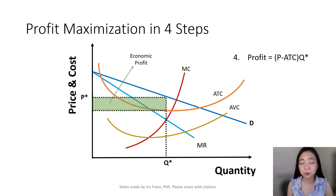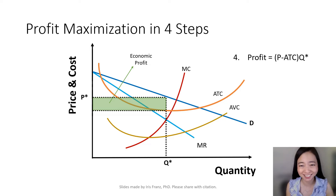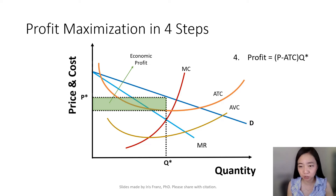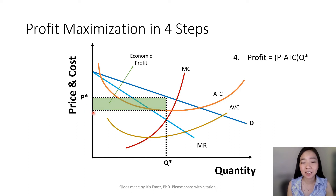And step four, I will be able to find my profit. We know that profit is equal to price minus average short-run cost times quantity. Our quantity is Q star, our price is P star, and given the quantity Q star, I can go back to look at my average short-run cost curve. And therefore, my profit is equal to price minus average short-run cost, times the quantity Q star. That's my profit.